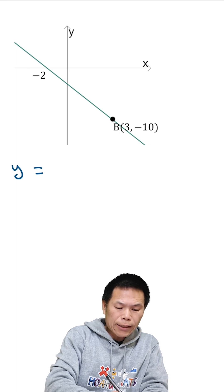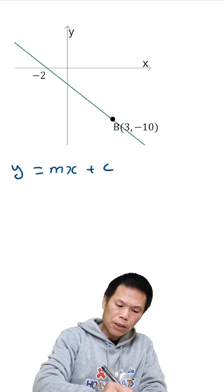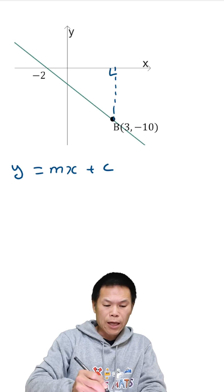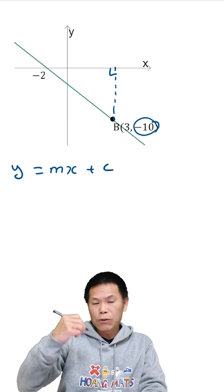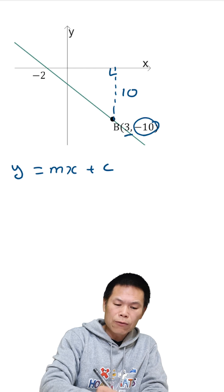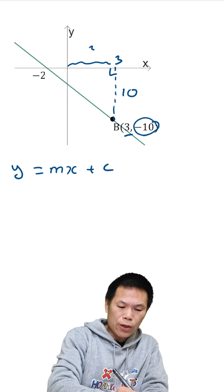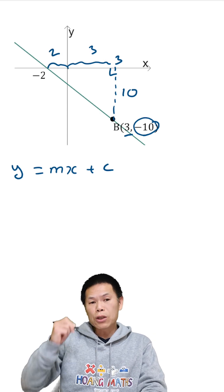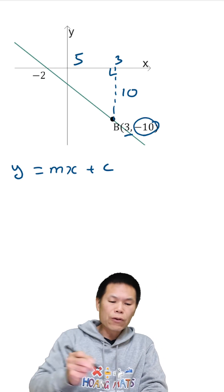We know that y is mx plus c, so let me just find the value and construct this triangle first. Therefore, from 0 to negative 10 is 10 units, right? So this is 10. Of course, 3 negative 10 means this 3 here and then that means from here to here three units, from here to here two units.